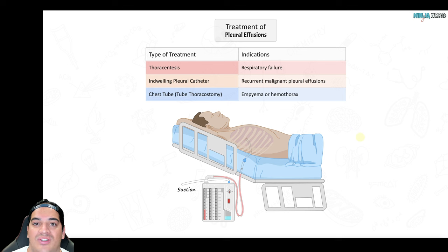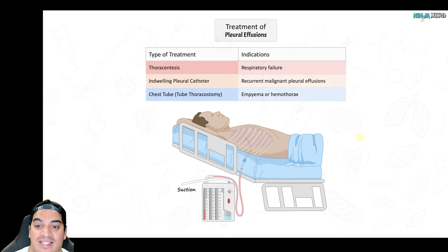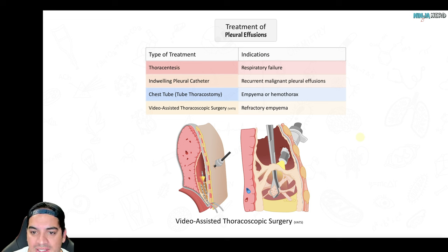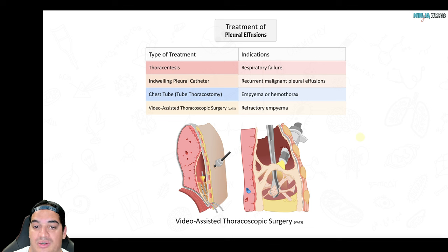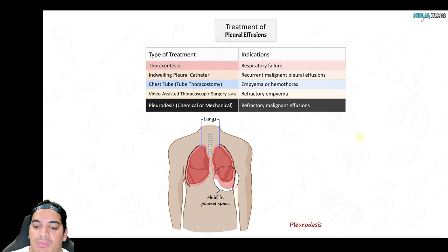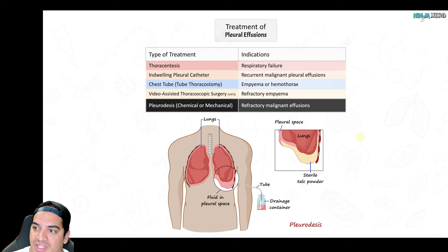A tube thoracostomy (chest tube placed at the 4th intercostal space, anterior-axillary line) is indicated for empyema with loculation or hemothorax. If the patient fails antibiotics and chest tube drainage — sometimes with TPA instilled through the tube to break up the empyema — surgery such as VATS (video-assisted thoracoscopic surgery) may be needed. Pleurodesis, either chemical (doxycycline or talc) or mechanical, obliterates the pleural space and is used for refractory malignant effusions.